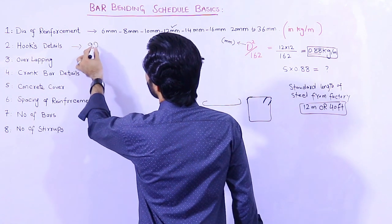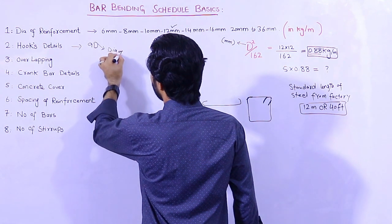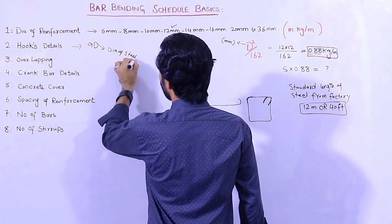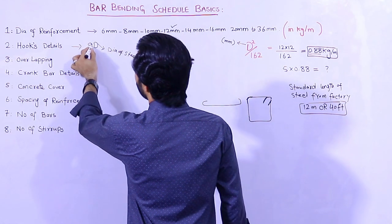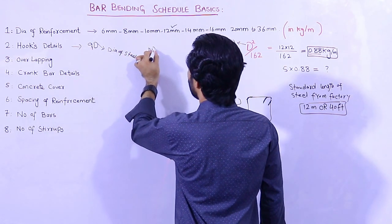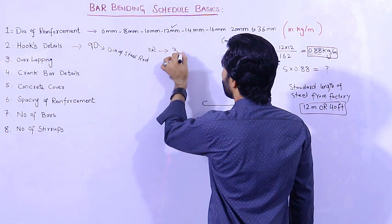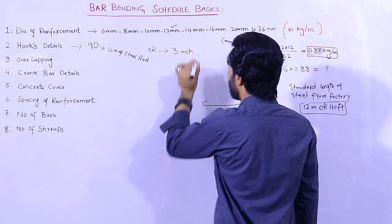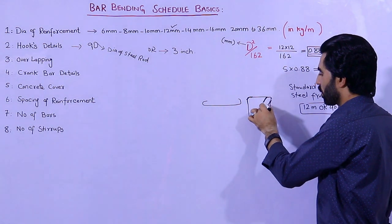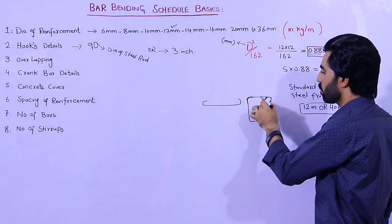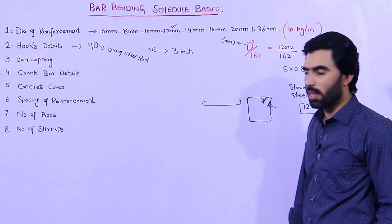The hook formula is 9D and it should not be less than 3 inches. So one hook is 3 inches and the other hook is 3 inches, making 6 inches total for both hooks.